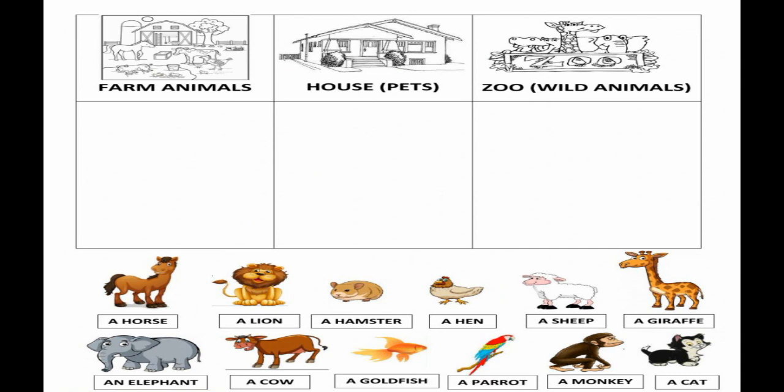This is your assignment: you have a list of different animals and you have to classify the animals into farm animal, house, and zoo animals. That's it, thank you.